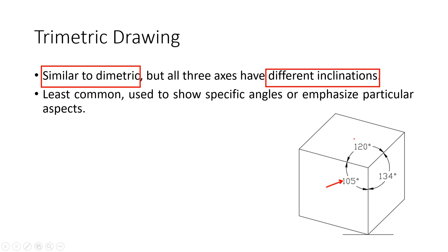Trimetric drawings are the least common of the three and are typically used when a designer wants to show a specific angle or emphasize a particular aspect of the object.